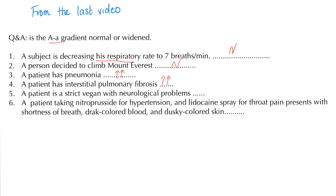A patient is a strict vegan with neurological problems — this is probably vitamin B12 deficiency. This can lead to anemia, which is a hemoglobin problem, but the lung is normal and the AA gradient is normal. A patient taking nitroprusside for hypertension and lidocaine spray for throat pain presents with shortness of breath, dark colored blood, and dusky colored skin — this is methemoglobinemia. The hemoglobin is dysfunctional, but the lung is normal and the AA gradient is normal.